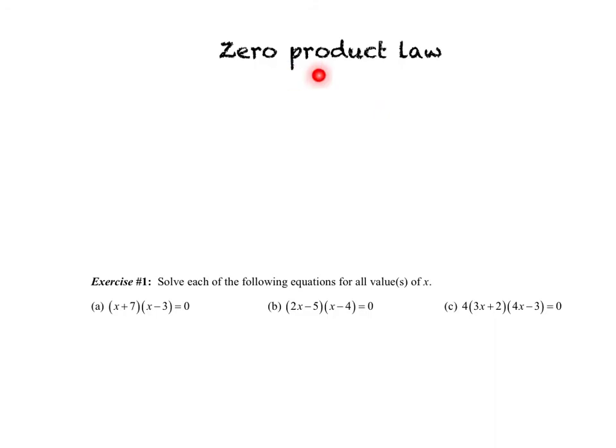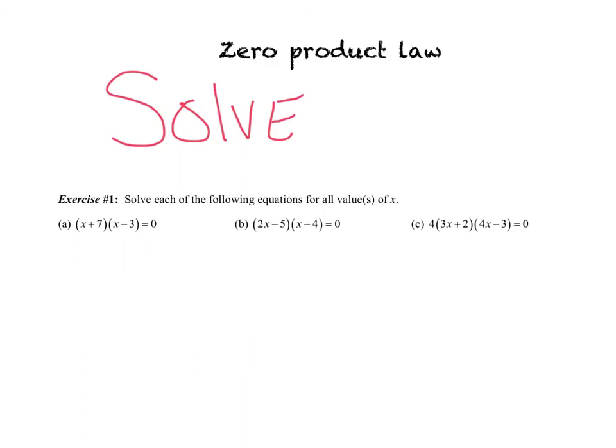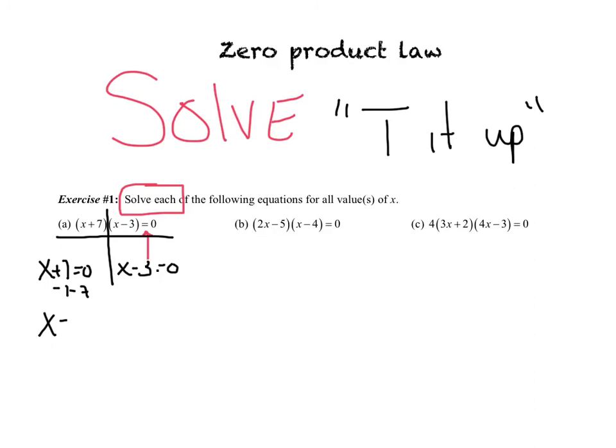Our last big examples deal with the zero product law. And we use this law when we are asked to solve equations. Notice we haven't solved anything yet. All we've done was factor. So, let's take a look at these examples. Notice they actually say the word solve each of the following equations for all values of x. And they have a solve because they all have an equal sign. So, basically, all we're going to do is probably what you've heard many times before in algebra, is what we call T it up. Basically, you make a T between each of your factors. So, these are factored, and I'm just going to T in between there, and set each side equal to 0. x plus 7 equals 0, and x minus 3 equals 0. Subtract the 7, so I get x equals negative 7, and add the 3. So, I get x equals 3. These are my solutions, and we typically write them in brackets.